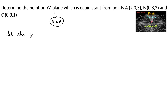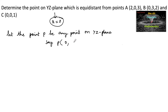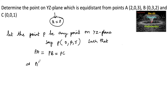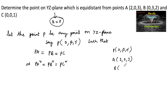Let point P be any point on the YZ-plane, say P(0, β, γ), such that PA = PB = PC, or equivalently PA² = PB² = PC². Here P is (0, β, γ), A is (2, 0, 3), B is (0, 3, 2), and C is (0, 0, 1).